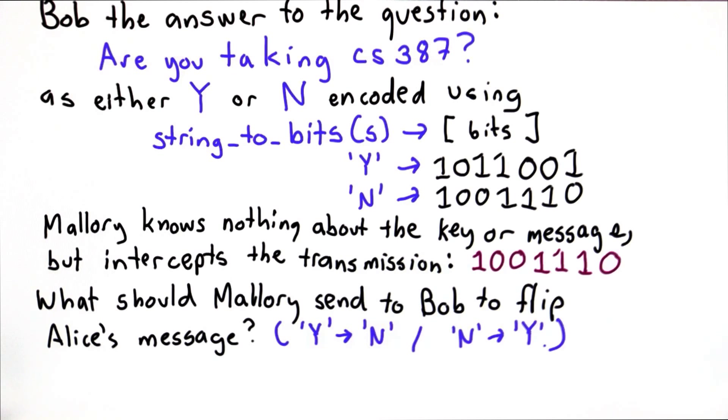And Mallory wants to cause trouble between Alice and Bob, so she wants to make Bob hear the opposite of what Alice said. So if Alice sent a Y, Mallory wants Bob to hear an N. If Alice sent an N, Mallory wants Bob to hear a Y. So what should Mallory send instead of the original message that she intercepted?